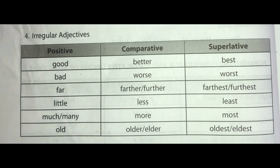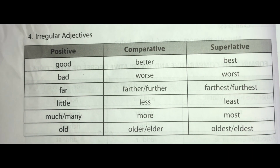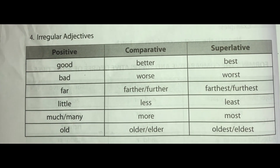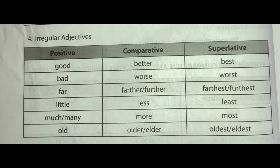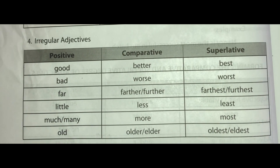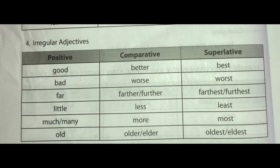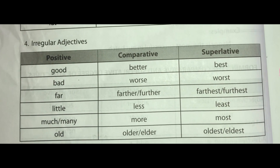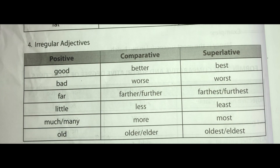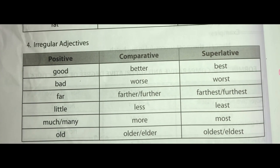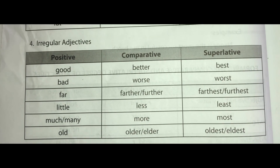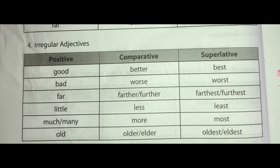Irregular adjectives. Positive: good — comparative: better — superlative: best. Bad — worse — worst. Far — farther or further — farthest or furthest. Little — less — least. Much or many — comparative: more — superlative: most. Old — older or elder — oldest or eldest.